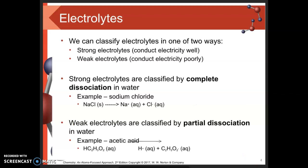As far as electrolytes are concerned, we can classify them into one of two categories: strong electrolytes, substances that conduct electricity very well, and weak electrolytes, which conduct electricity poorly. It's important to note that weak electrolytes still do conduct electricity — they just do it poorly.